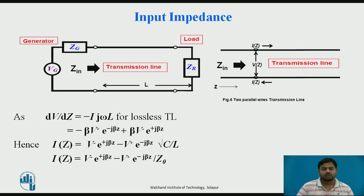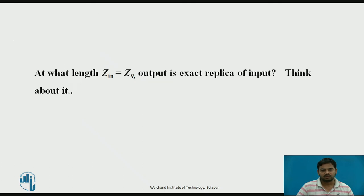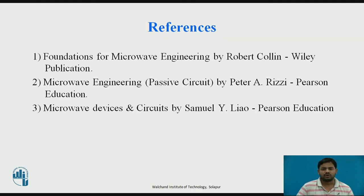For the input impedance of the lossless transmission line: suppose there is a lossless transmission line with a sinusoidal generator and generator impedance at the input side. Writing the equations for voltage and current gives the input impedance, which can be solved to obtain the result shown. The question to consider is: at what length — that is, at what value of z equal to l — does the input impedance equal the characteristic impedance? In that case, the output is an exact replica of the input. These are the comparisons of the lossy and lossless transmission line, along with some references.